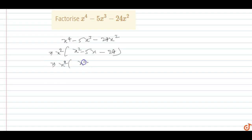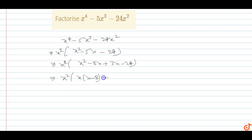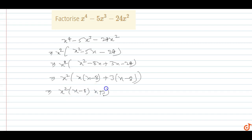Now split the middle term: x square minus 8x plus 3x minus 24. Taking x common from the first pair: x into x minus 8, plus 3 into x minus 8. So the factorization gives x square into x minus 8 into x plus 3.